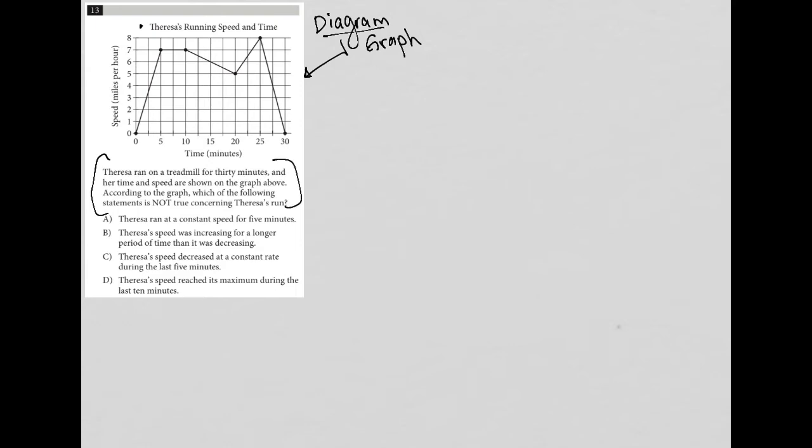So we know that this is Teresa's running speed and time. We have the x-axis being time in minutes, which may become important, and we have the speed in miles per hour. So remember, this is hours, this is minutes.